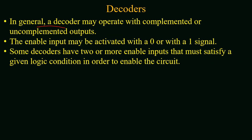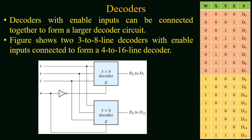In general, a decoder may operate with complemented or uncomplemented outputs, and the enable input may be activated with a zero or a one signal — this depends on the design criteria or system requirements. Sometimes a decoder has two or more enable inputs, and these inputs must satisfy a given logic condition to activate the circuit. Enable inputs play an important role in decoders, as decoders with enable inputs can be connected together to form a larger decoder circuit — that is, a larger decoder can be implemented using smaller decoders by utilizing the enable input.